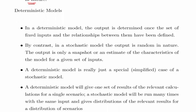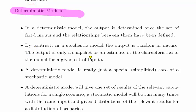In a deterministic model, the output is determined once the set of fixed inputs and the relationship between them has been defined. By contrast, in a stochastic model, the output is random in nature. The output is only a snapshot or an estimate of the characteristics of the model for a given set of inputs.